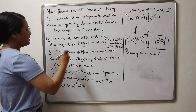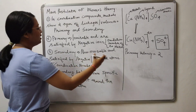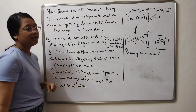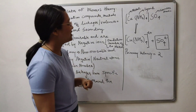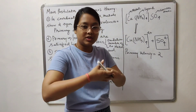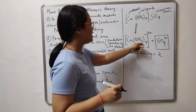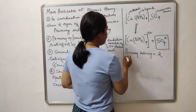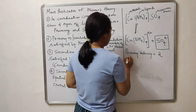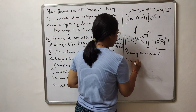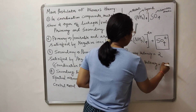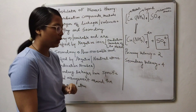Secondary valencies are non-ionizable and satisfied by negative or neutral atoms. In simple terms, secondary valency is always equal to the coordination number of your complex. In this particular case, what does not get ionized is the ligand — tetraamine. The number of ligands attached to the central metal atom is your secondary valency. So in this case, secondary valency is 4.